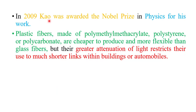In 2009, Kao was awarded the Nobel Prize in Physics for this work. There are basically two types of fiber: plastic fiber and glass fiber. Plastic fiber is made up of PMMA — polymethylmethacrylate — polystyrene, or polycarbonate. Plastic fibers are cheaper to produce and more flexible than glass fiber, but there is greater attenuation of light, which restricts their use in communication to short distance links within buildings or automobiles.